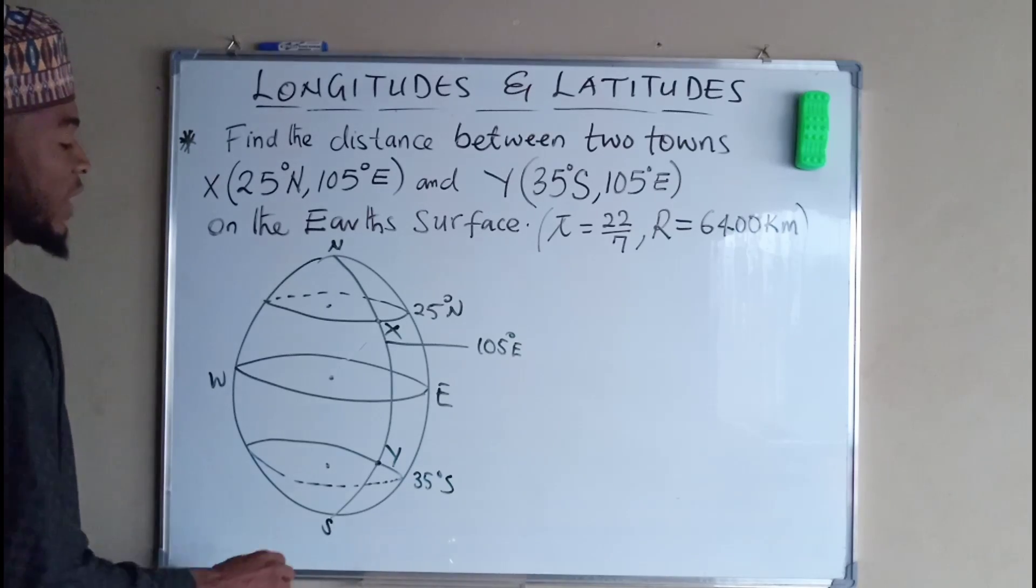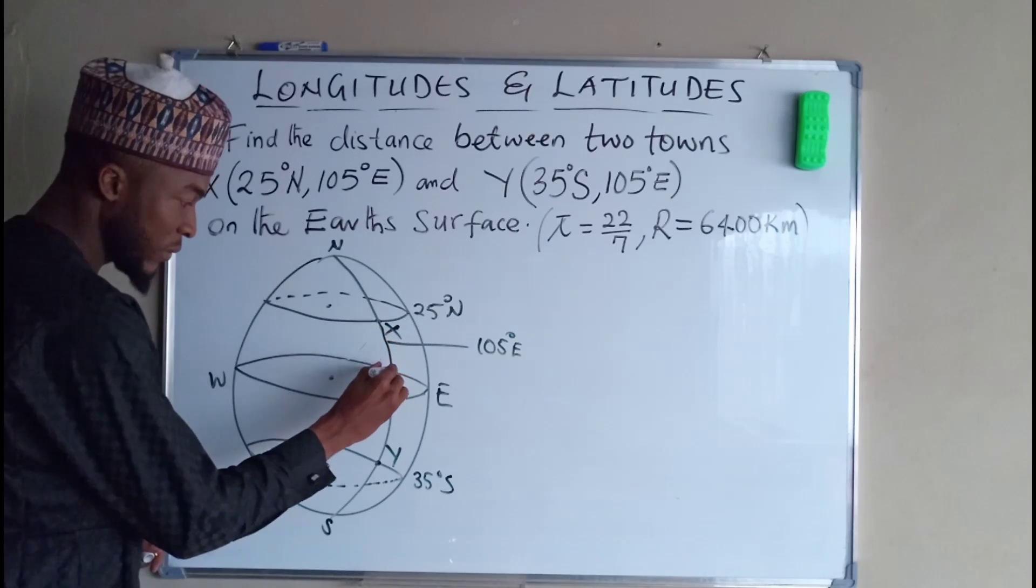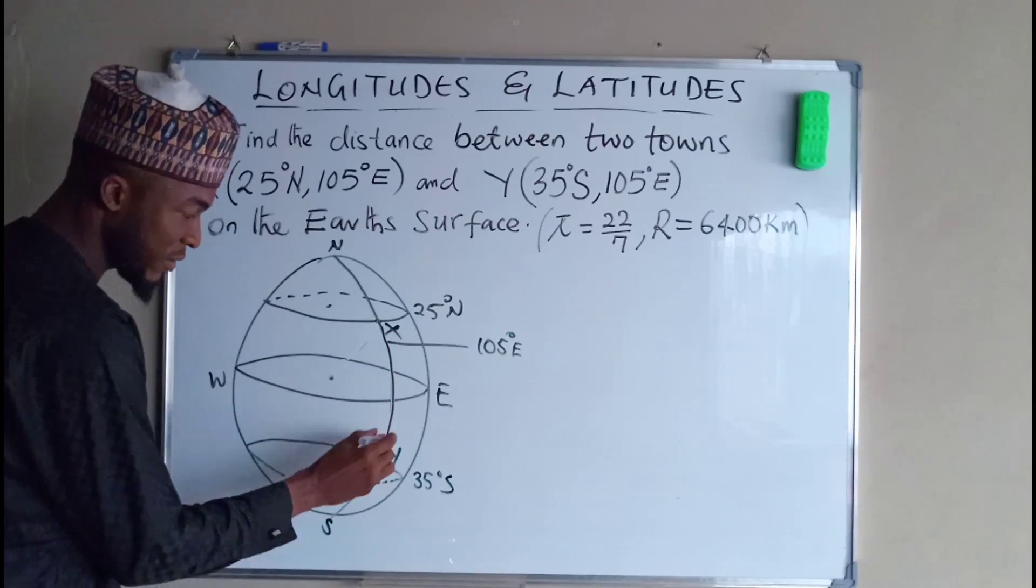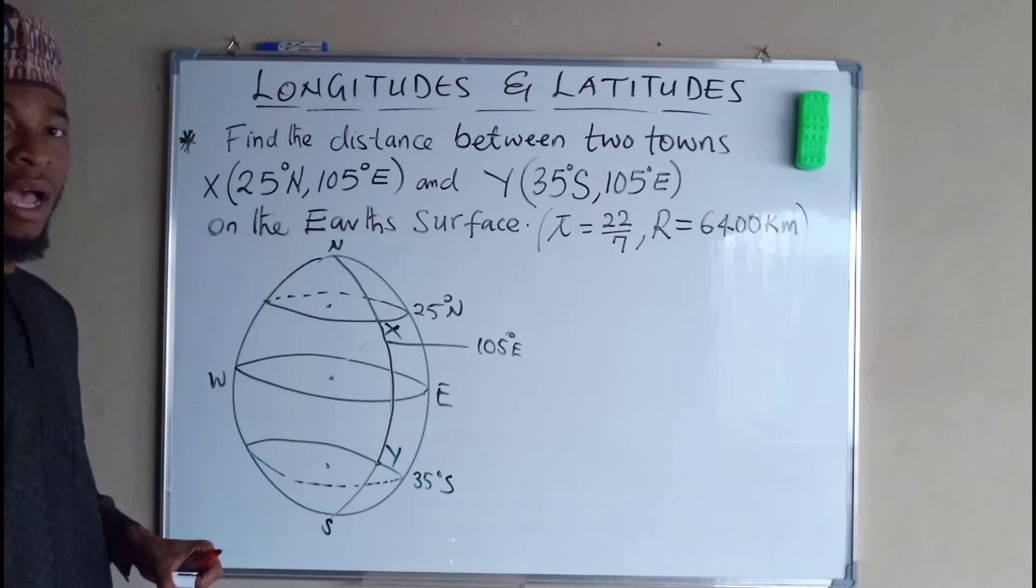So what we are asked to find is the distance between these two towns which is from this point X to Y. This is the exact distance we are looking for which is also an arc of a circle.